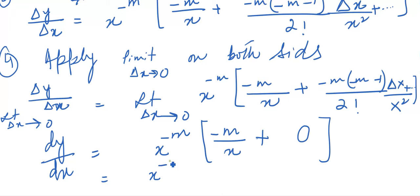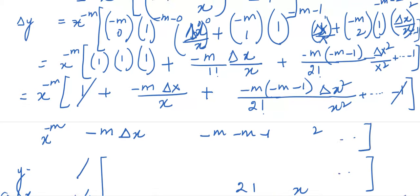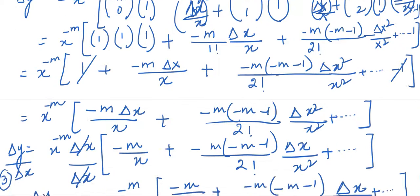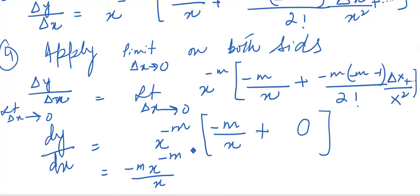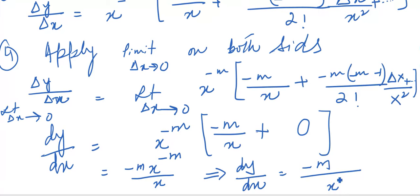We are left with x raised to power minus m and here we have minus m divided by x. Since x appears in both numerator exponent and denominator, we combine: dy/dx = minus m divided by x raised to power (m+1). This is the final answer. We solved this question using the binomial theorem — it is a slightly lengthy question, but the concept is the same as the previous questions. Practice it, and if any point is unclear, you can ask. Subscribe to the channel and thank you very much.